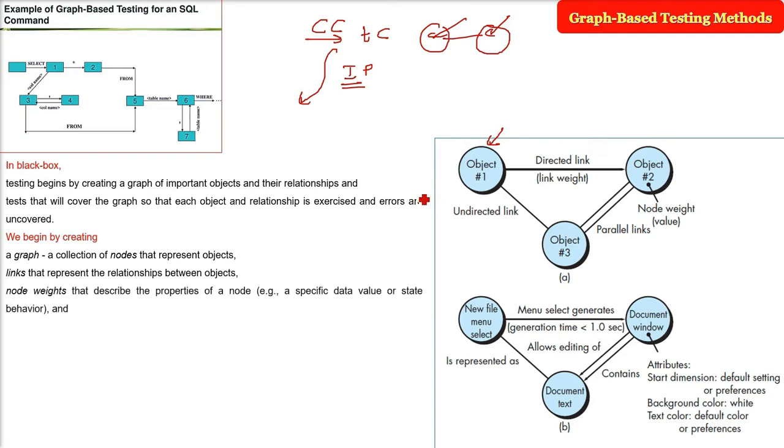The links that represent the relationship between objects. And all the nodes, we can describe the weight also that can be a property. For example, a specific data value or a state behavior. For example, if a is 10, a++ you have done, it has become 11. So the state is different.